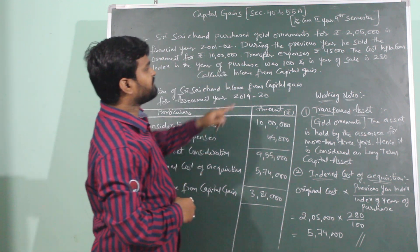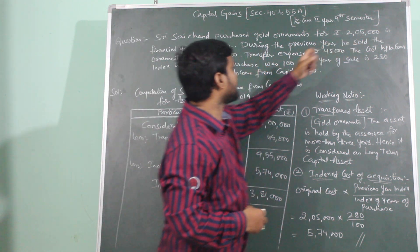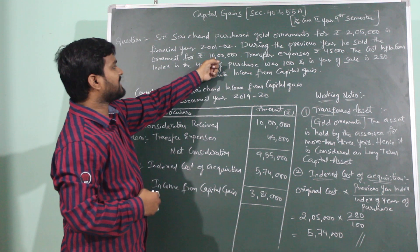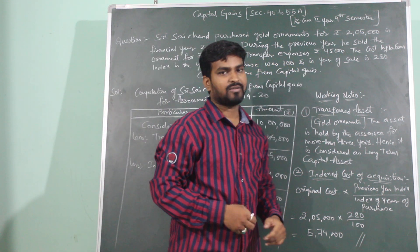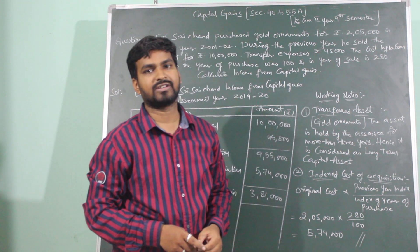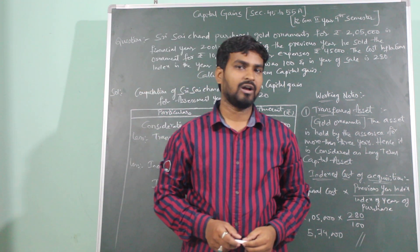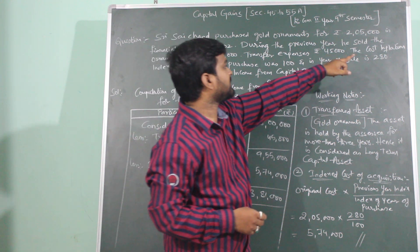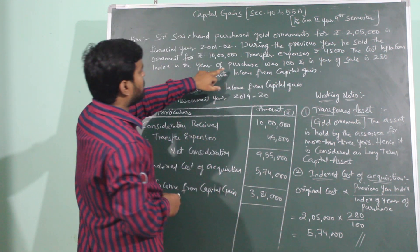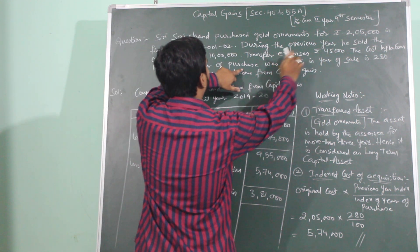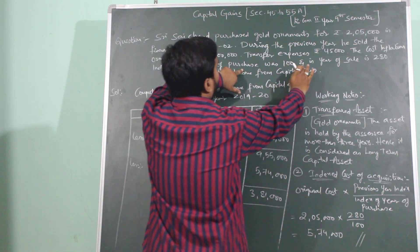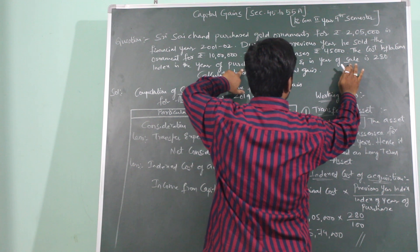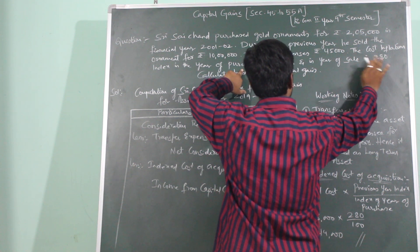This will be your cost of acquisition and this is consideration received. Transfer expenses is Rs. 45,000. The cost inflation index in the year of purchase was 100, and in the year of sale it was 280.